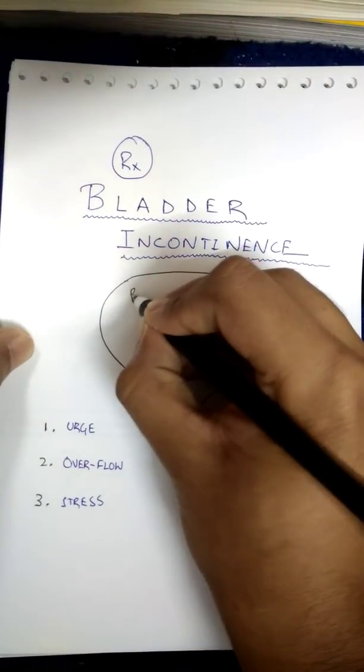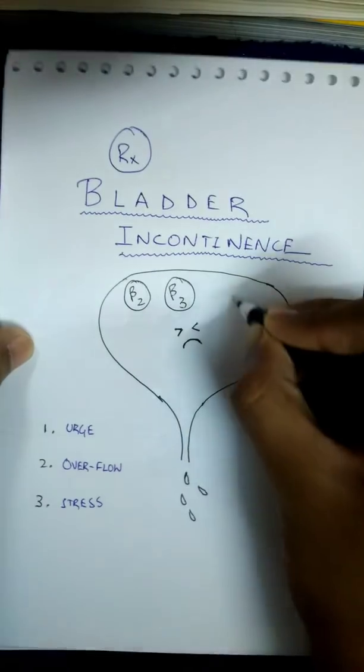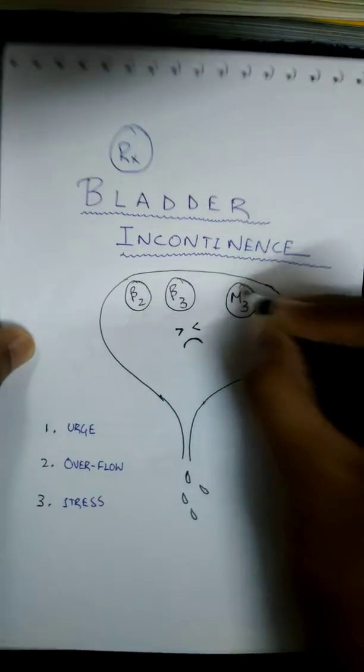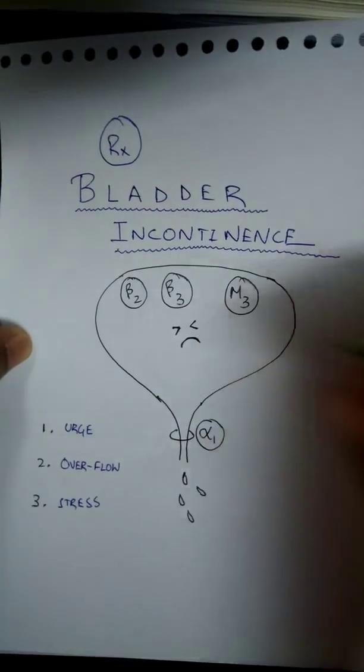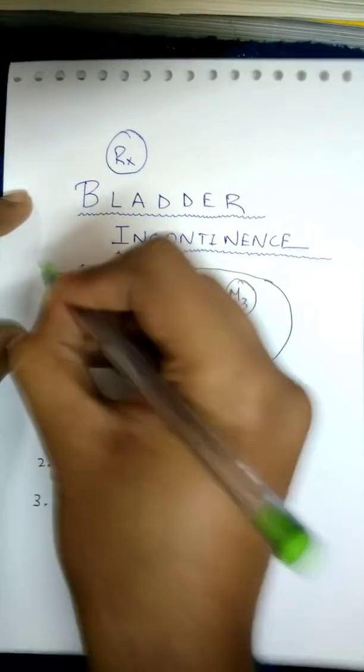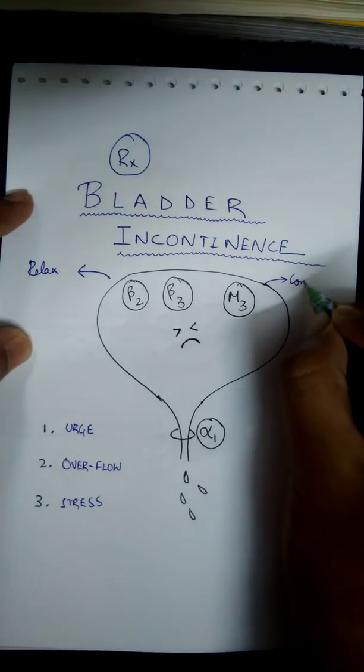We have beta 2, beta 3, and M3 receptors on the bladder. Around the sphincter we have alpha 1. Beta 2 and beta 3 relax the bladder, M3 contracts the bladder.